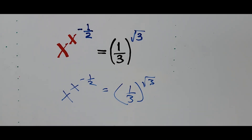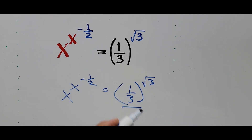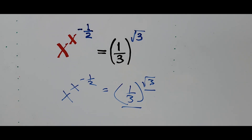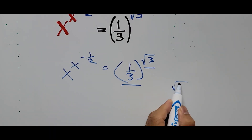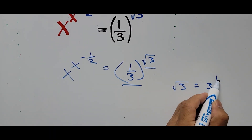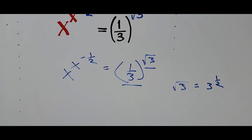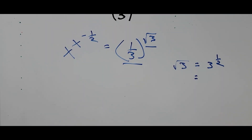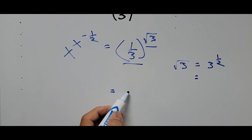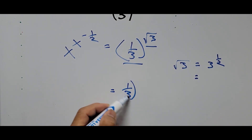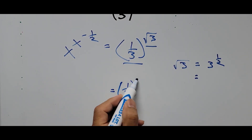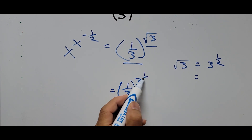Now we focus on the right side of the equation: 1 third raised to the power of square root of 3. This square root of 3 could be written the same way as 3 raised to the 1 half power. So the right side of the equation now becomes 1 third raised to the power of 3 raised to the 1 half power.